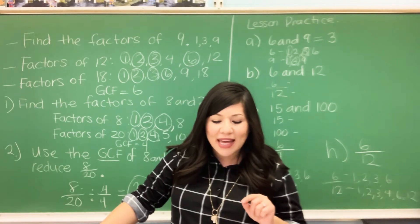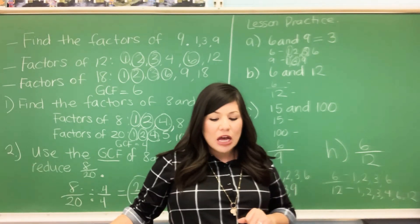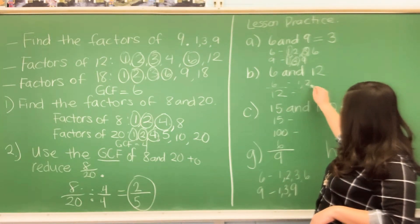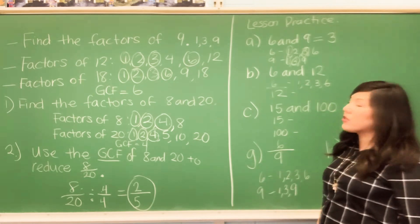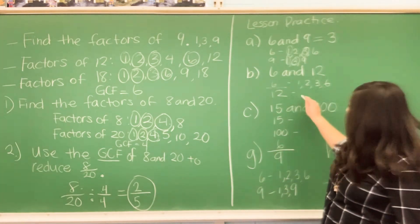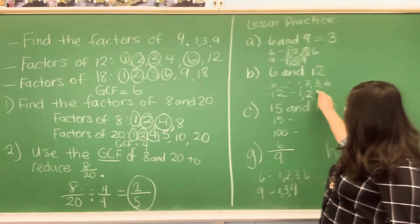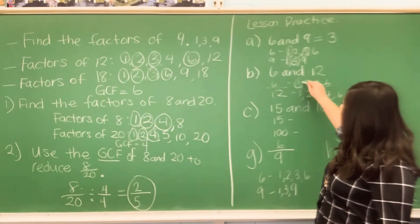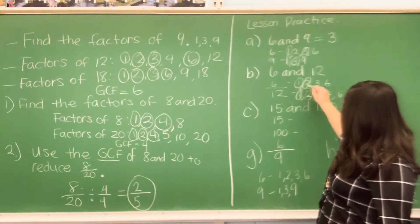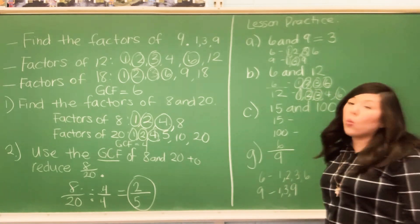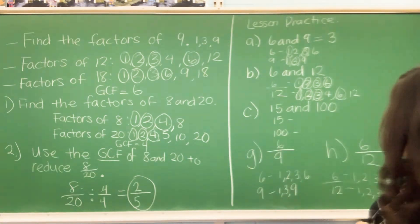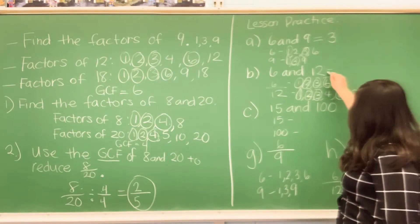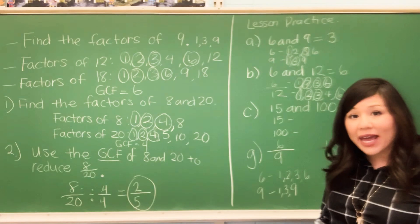Let's do letter B: 6 and 12. Find the greatest common factor for 6 and 12. We already know the factors of 6 are 1, 2, 3, and 6. The factors of 12 are 1, 2, 3, 4, 6, and 12. Both have 1, 2, 3, and 6 in common. The largest number that both have in common is 6. So the greatest common factor for 6 and 12 is 6.